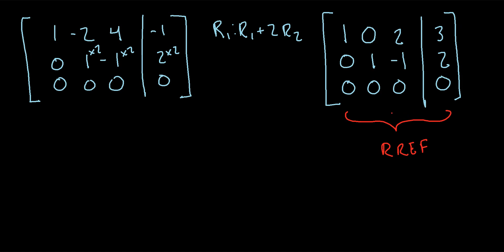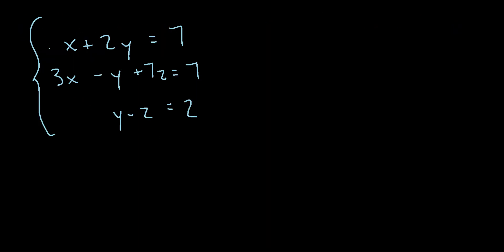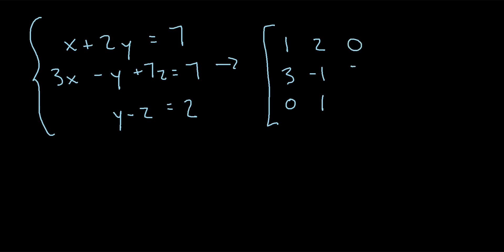Now we go back to the second set of equations, convert it to an augmented matrix, and get it to reduced row echelon form to see if it matches the first. If it matches, the two matrices are row equivalent. For the second system, the first column — coefficients for x — is 1, 3, 0 (the last equation has no x). The y-coefficients are 2, negative 1, 1. The z-coefficients are 0, 7, negative 1. And the augmented column is 7, 7, 2.